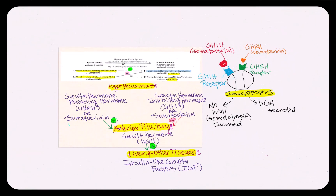Let's discuss another set of hormones, beginning with what is produced by the hypothalamus. We have growth hormone-releasing hormone, GHRH, also referred to as somatocritin, secreted by the neurosecretory cells of the hypothalamus.